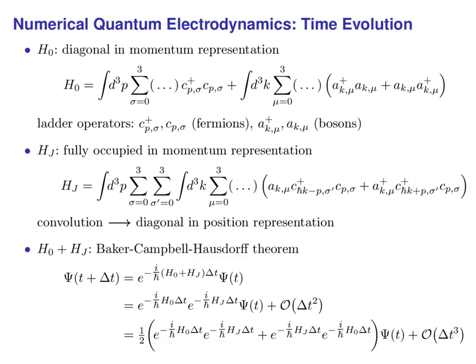To calculate the time evolution of our state, we need the exponential of the sum of both parts of the Hamiltonian. Since they do not commute, the exponential of their sum is not the product of their exponentials. However, we can still use that as an approximation. Using the Baker-Campbell-Hausdorff theorem, it is straightforward to keep the error under control and to improve this approximation.